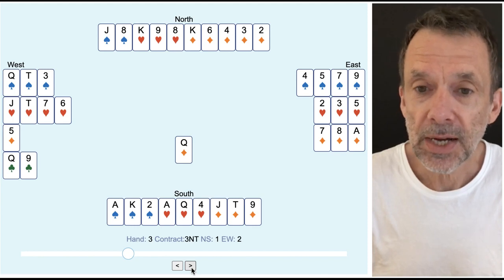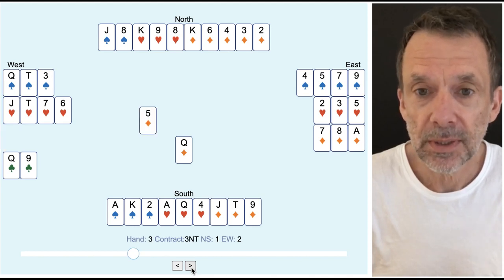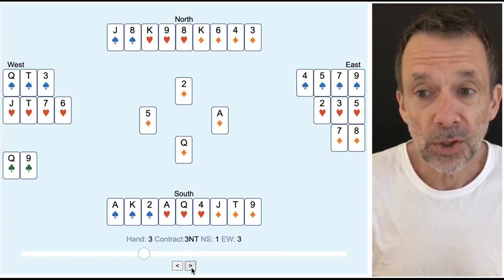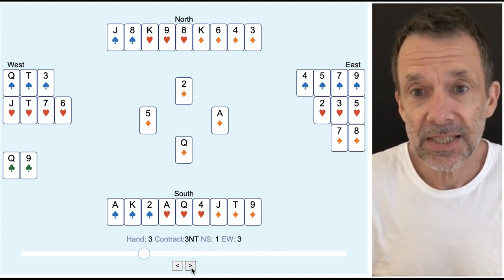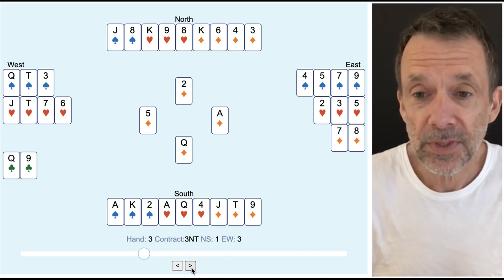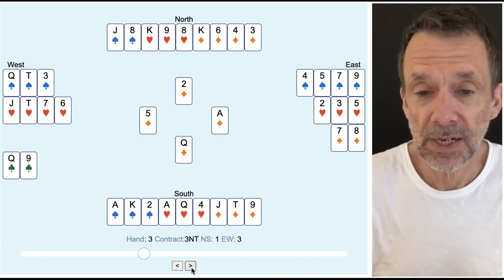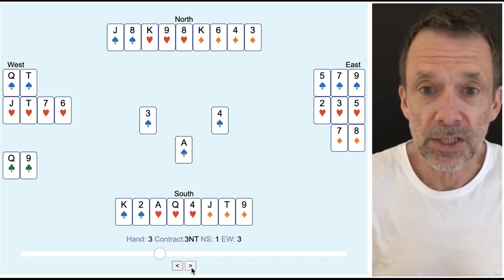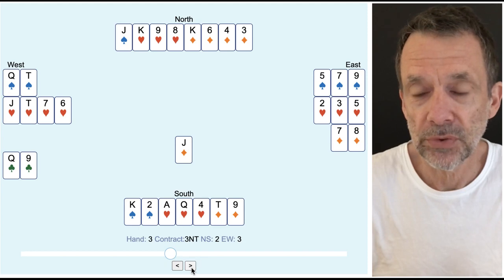Now I tackle the diamonds. There's still two clubs left but because east has the ace of diamonds and no more clubs left the opposition can't take their two club tricks. So east tries a spade but I've got the rest of the tricks.